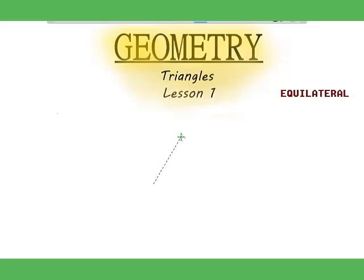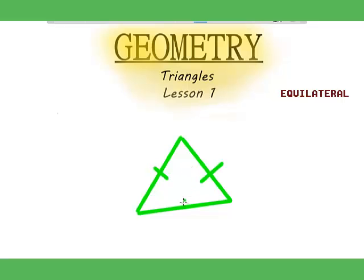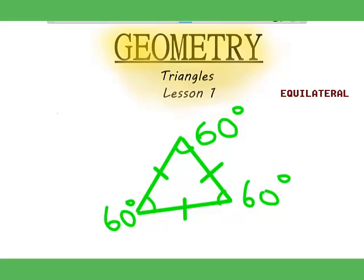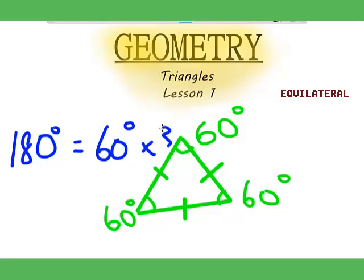So the next triangle is the equilateral triangle. This triangle has three equal sides and three equal angles, and each angle equals sixty degrees. In a triangle, the angles added up is equal to 180 degrees, which is sixty degrees plus sixty degrees plus sixty degrees, which is sixty times three. So that's why an equilateral triangle has each angle of sixty degrees.